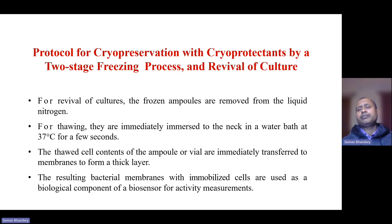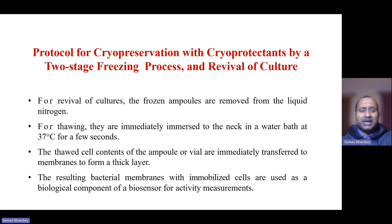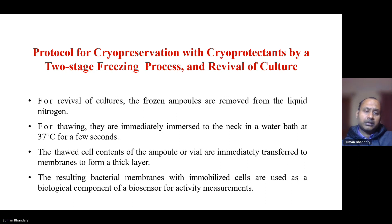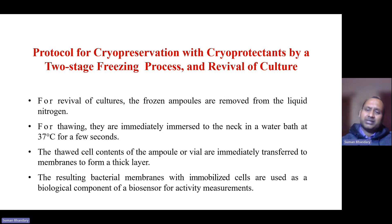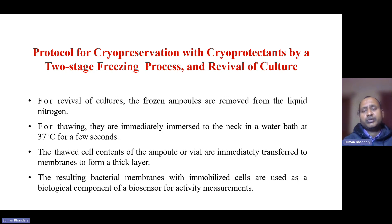When you need to revive stored cells, remove the frozen ampoules and do not place them immediately into 37 degrees centigrade. Rather, first keep them at refrigerator temperature, then transfer to a water bath at 37 degrees centigrade for a few seconds. The thawed cell contents of the ampoule or vial are then immediately transferred and can be cultured in liquid culture medium or broth culture if it is a bacterial or fungal cell.